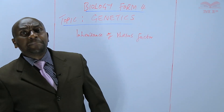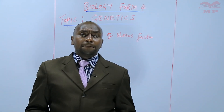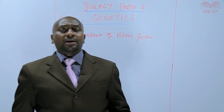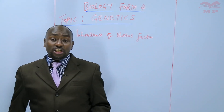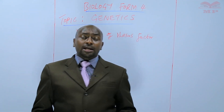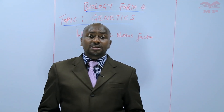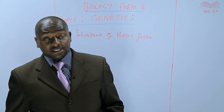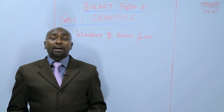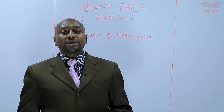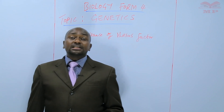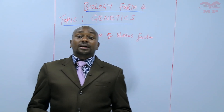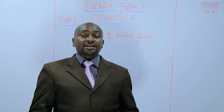Besides the A, B and O blood groups, we have another additional antigen that also determines the blood groups, and we refer to this antigen as the Rhesus factor. If a person has the Rhesus factor, then we say that the blood group is positive, or the blood group is Rhesus positive. And if the person doesn't have the Rhesus factor, we say that the person is negative, or is Rhesus negative.